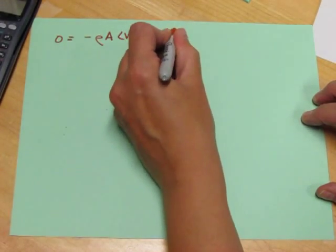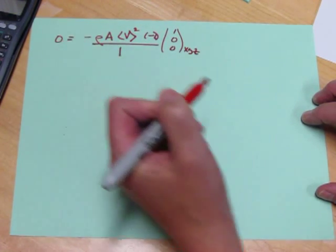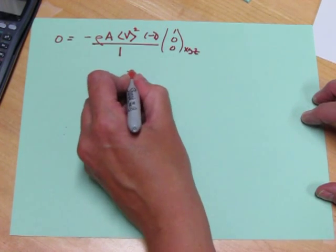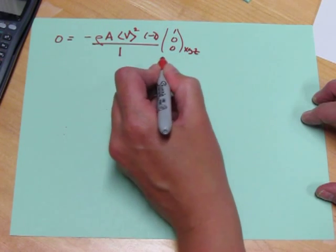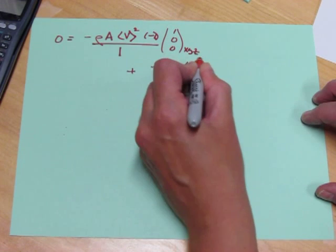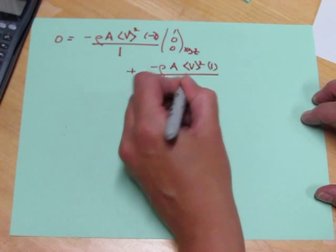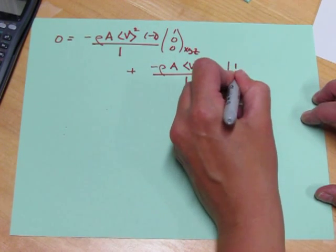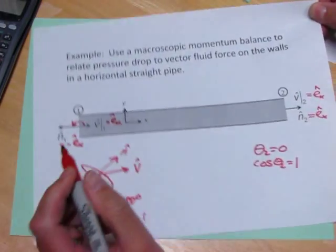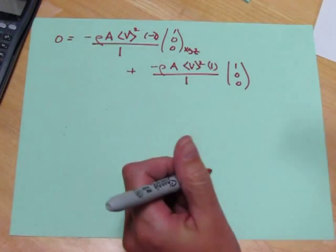So we have the inlet plus the outlet which is minus the same density, the same cross-section, the same velocity, cosine of zero which is one divided by the same beta which is one times the same V hat. Because both the velocities are in the same direction both at the inlet and the outlet, we get that term.